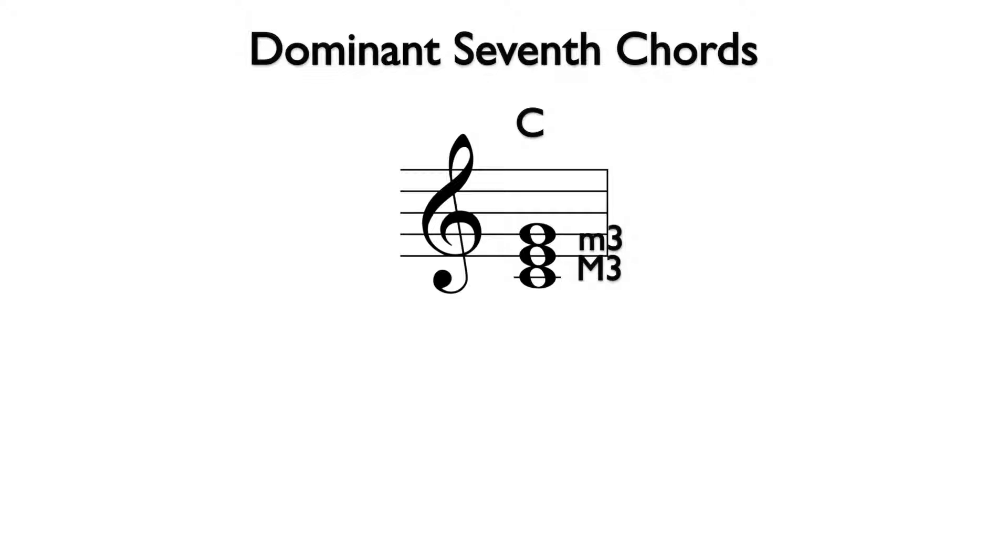We can add one more note a third above the G to find the interval of a seventh from the root. To be a dominant seventh chord, this note needs to be a minor seventh above C.